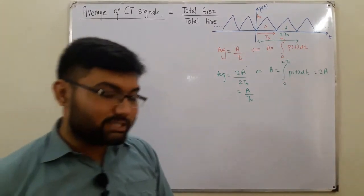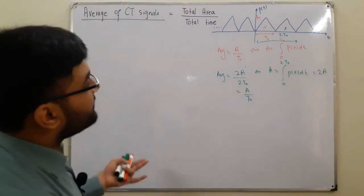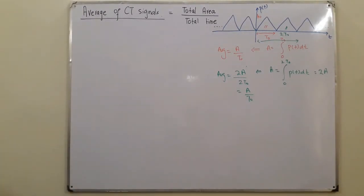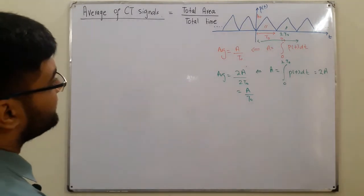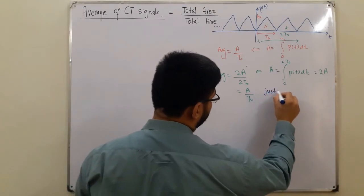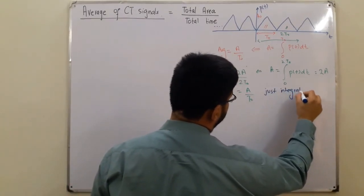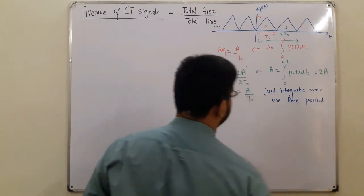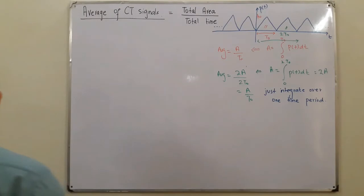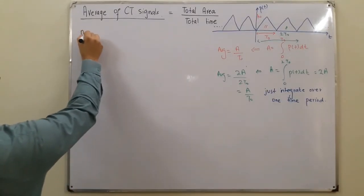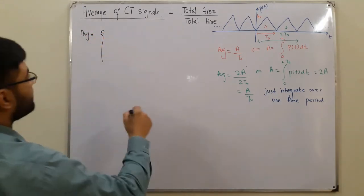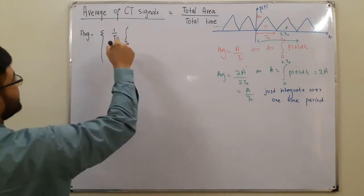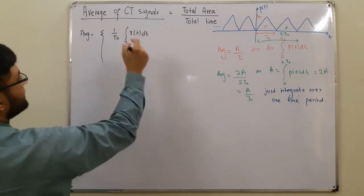For any number of cycles you take, you get the same average. This means that for a periodic signal, you only need to integrate over a single cycle — one time period is enough. The formula for the average of a periodic signal is: average = (1/t₀) times the integral over one period t₀ of x(t) dt.